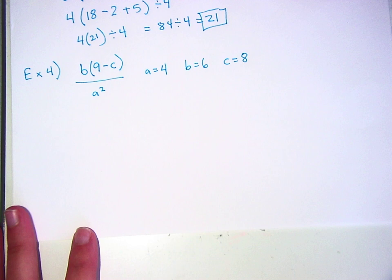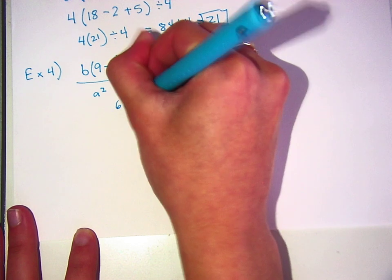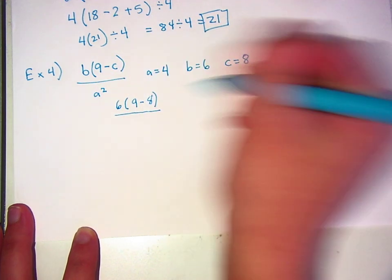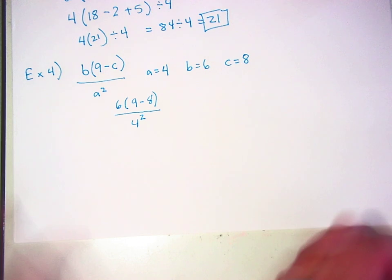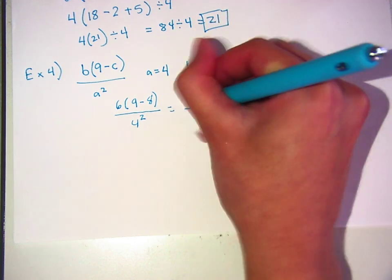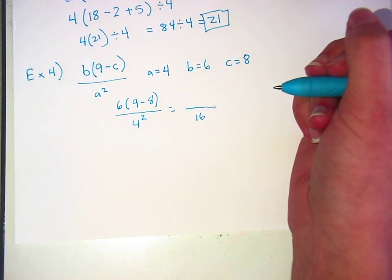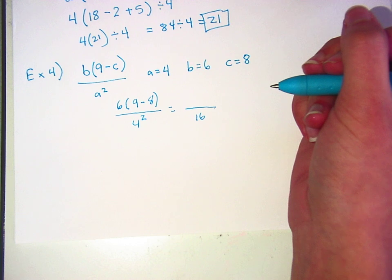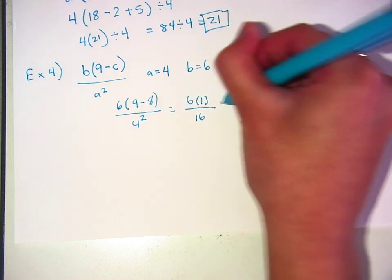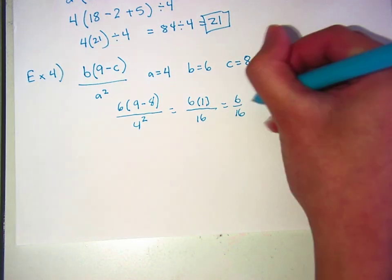Okay, so we just change everything to numbers instead of letters. So it would be 6, I forgot what it's called, subtracted by 8. Parentheses. And then over 4 squared. And 4 squared turns to 16. Whoa, slow down. First of all, you're not going to let your partner say anything. Go for it. And then 9 minus 8 is 1 times 6 is 6. Okay, and then 6 over 16 reduced is 3 over 8.